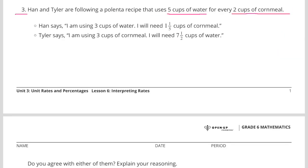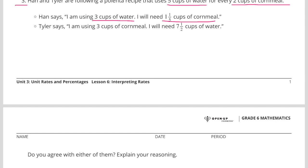Number 3. Han and Tyler are following a polenta recipe that uses 5 cups of water for every 2 cups of cornmeal. Han says, I'm using 3 cups of water. I will need 1 1⁄5 cups of cornmeal. Tyler says, I'm using 3 cups of cornmeal. I will need 7 1⁄2 cups of water. Do you agree with either of them? Explain your reasoning.